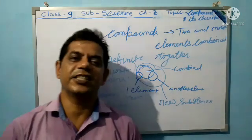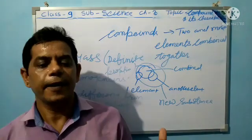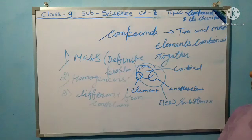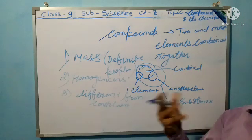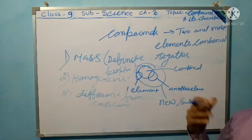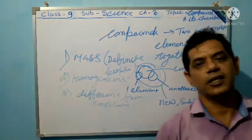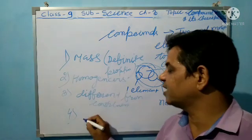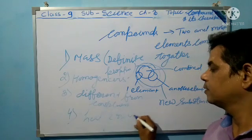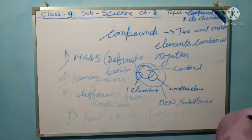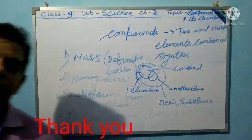The fourth characteristic is: during the formation of a compound from its elements, a certain amount of energy is involved. When two or more elements combine to form a new compound, energy in the form of heat, light, and electricity is either absorbed or evolved. These are the four characteristics of a chemical compound.